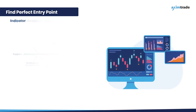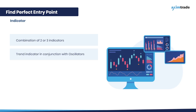In most cases, entries based on indicators are usually based on a combination of two or three indicators. The most accurate entries can be obtained by using trend indicators in conjunction with oscillators, such as the moving average. As a result, traders are able to filter out false signals and increase the number of profitable entry points.